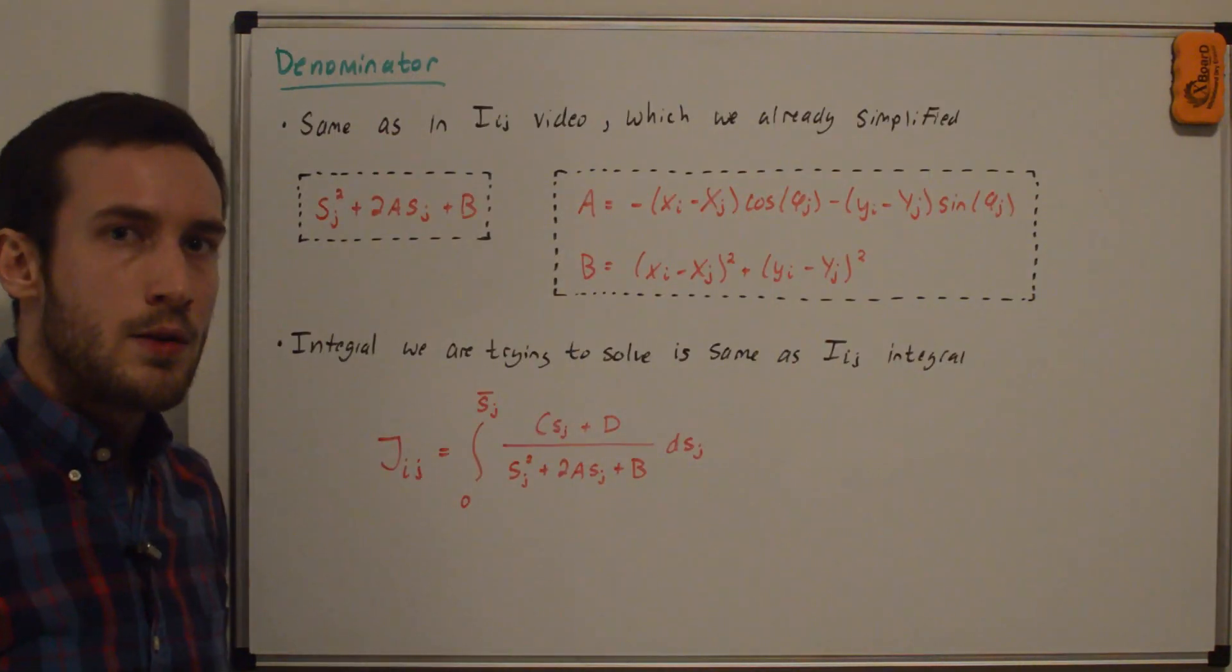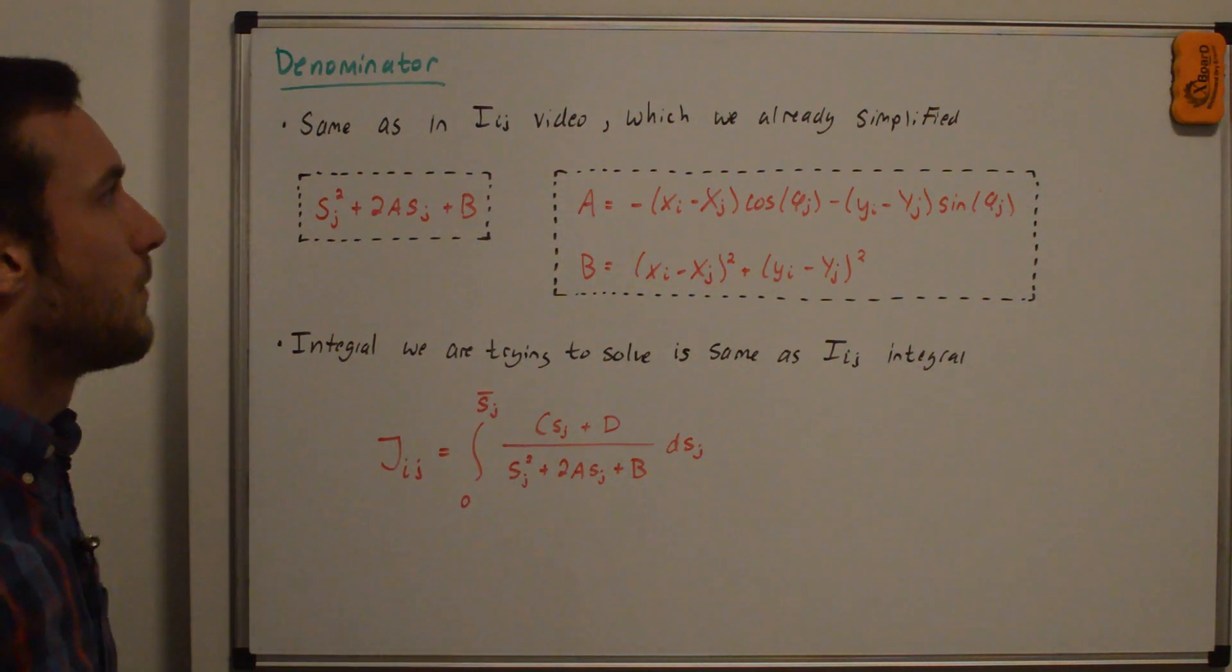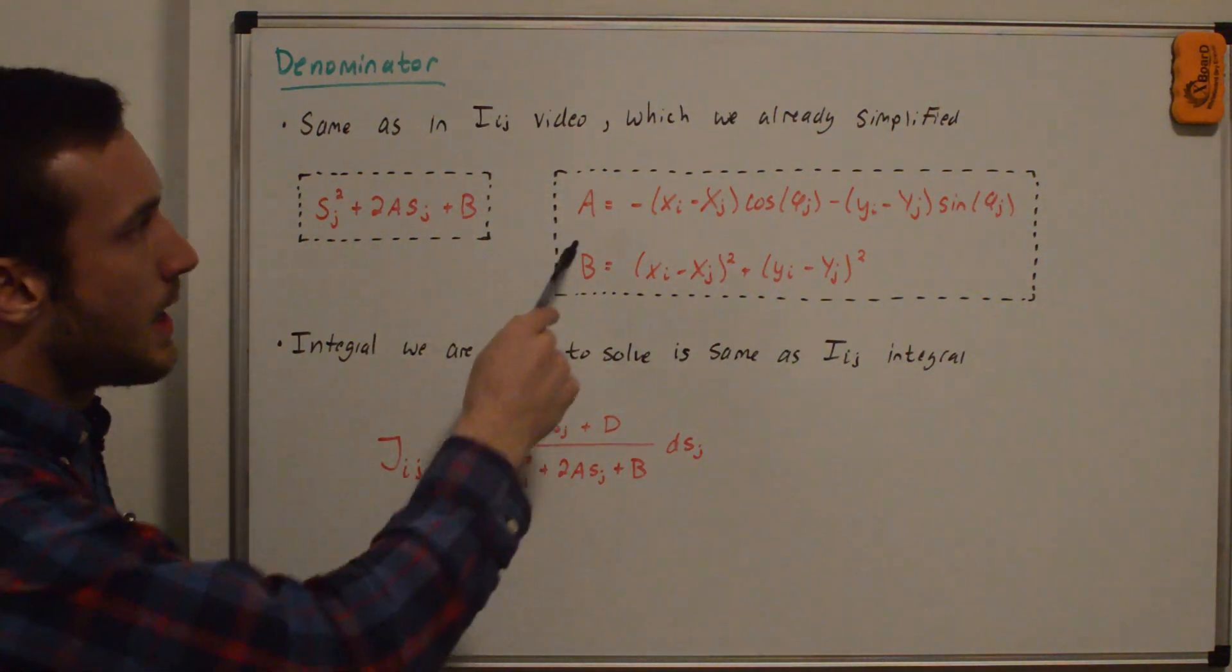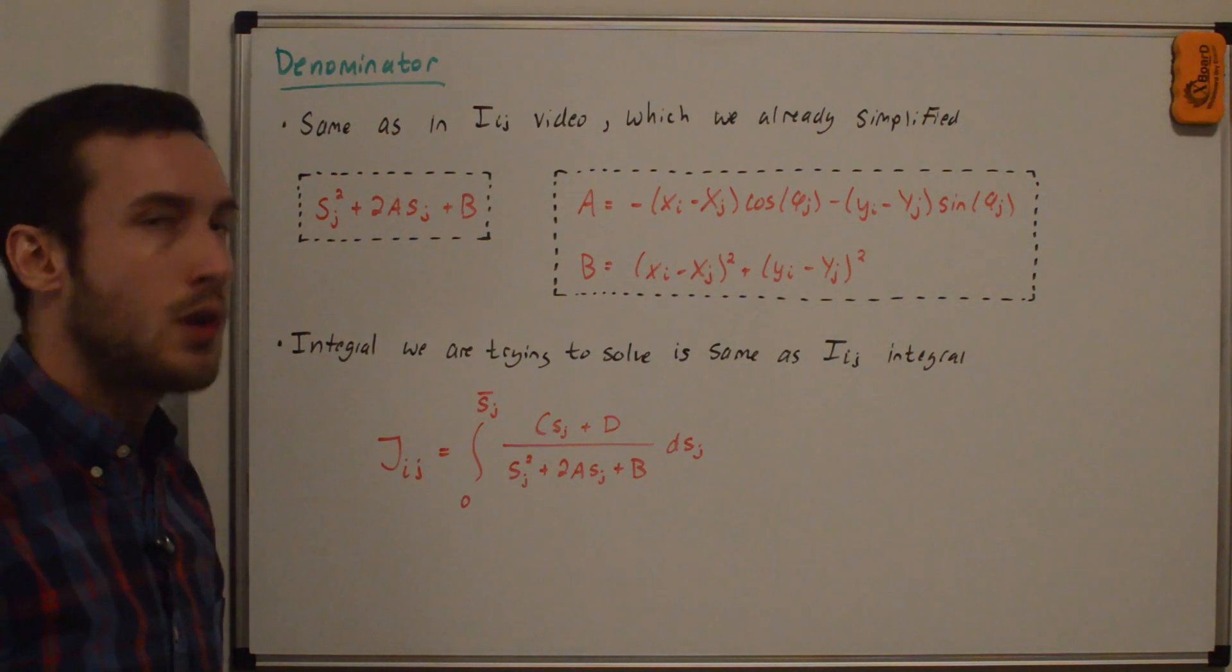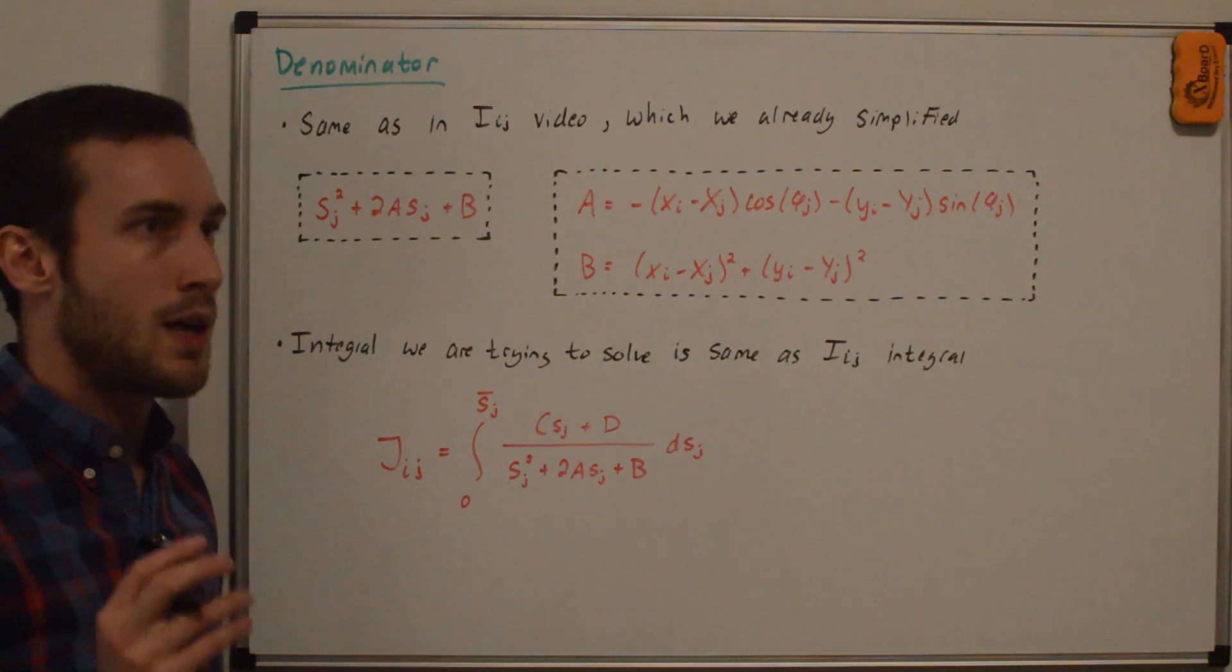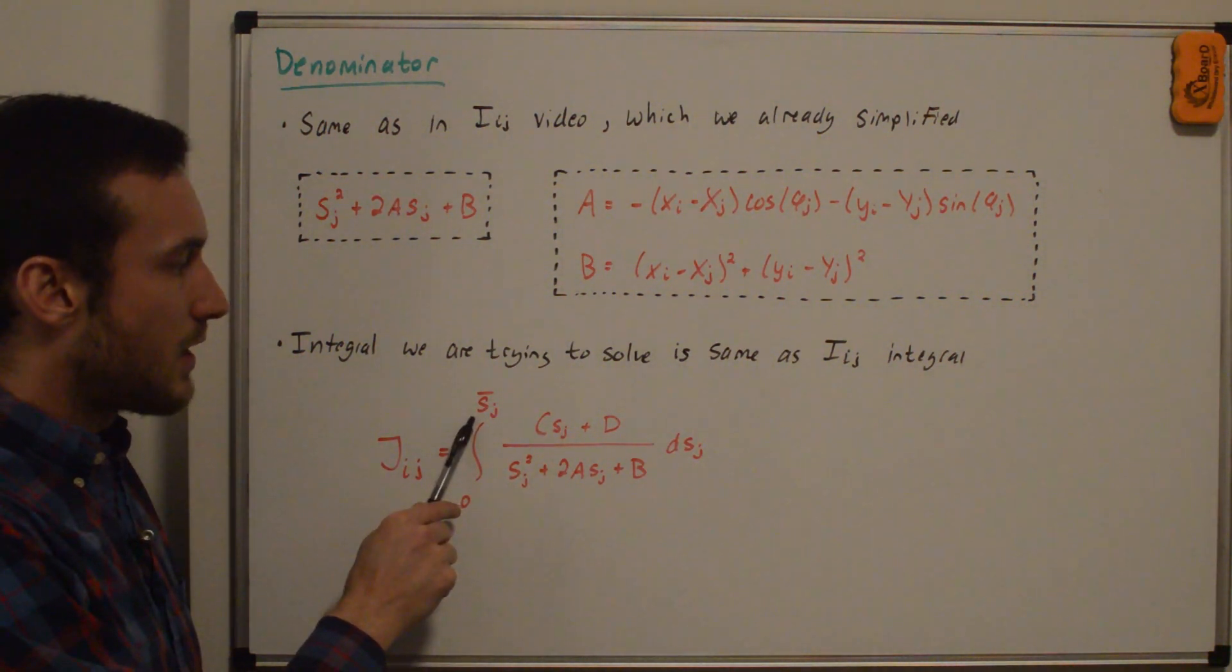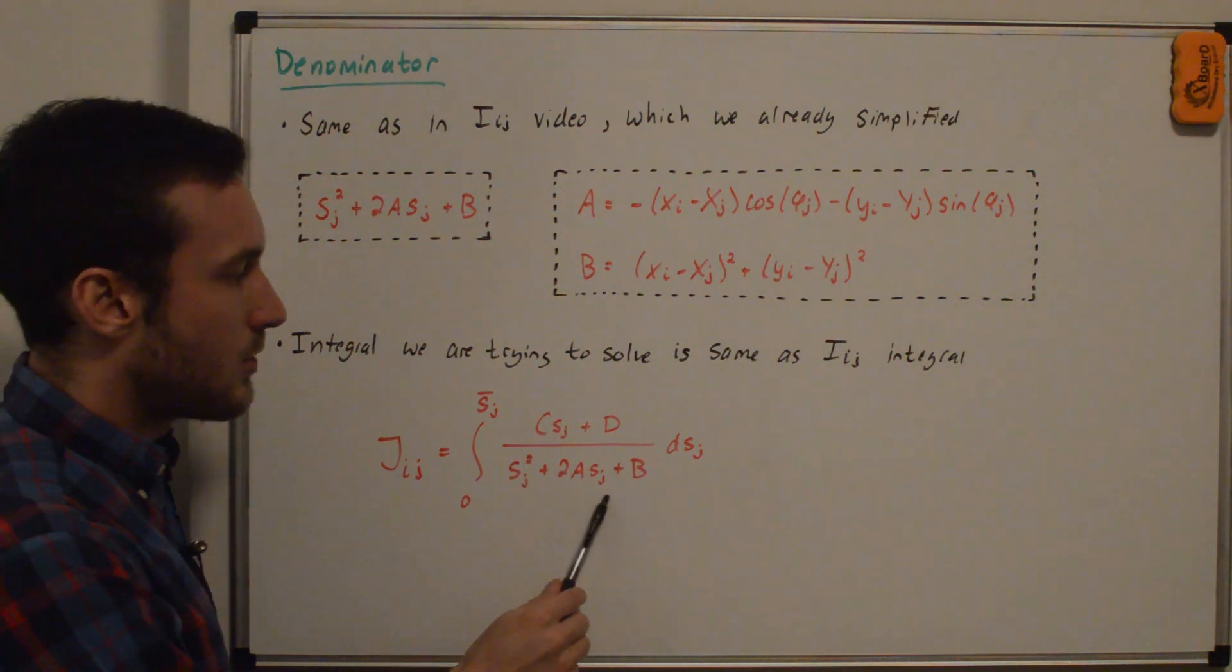And the denominator now is the same as in the iij video. And it will be the same throughout all these derivation videos. And we've already simplified this down to the form of sj squared plus 2asj plus b, where a is given by this expression and b is given by this expression. And so the integral that we're trying to solve is the same as the iij integral that we were trying to solve in the previous video, which I have a full in-depth derivation for. So jij, we're integrating from zero to the panel length, s bar j of c sj plus d over sj squared plus 2asj plus b.